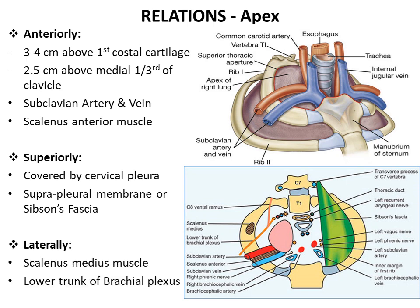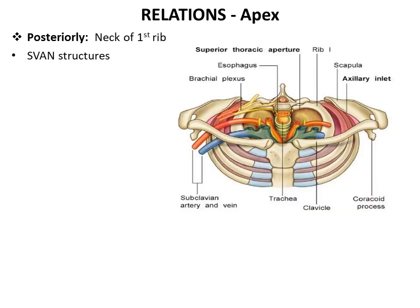Laterally lies the scalenus medius muscle and the lower trunk of the brachial plexus. The apex of the lung posteriorly extends up to the neck of the first rib. Therefore, the posterior relations of the apex are the same as the anterior relations of the neck of the first rib, remembered with the mnemonic SWAN: from medial to lateral — sympathetic chain, first posterior intercostal vein, superior intercostal artery, and the first thoracic nerve.